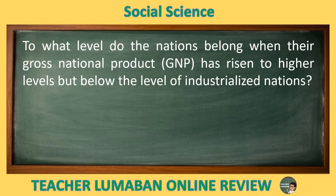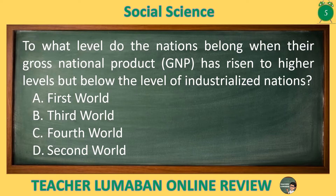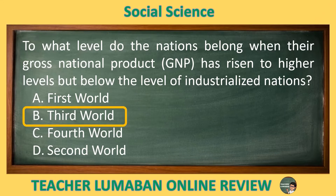To what level do the nations belong when their gross national product has risen to higher levels but below the level of industrialized nations? Letter A: First World. Letter B: Third World. Letter C: Fourth World. Letter D: Second World. The correct answer is Letter B, Third World. The level of the nations belongs to the Third World when their gross national product has risen to higher levels but below the level of an industrialized nation.